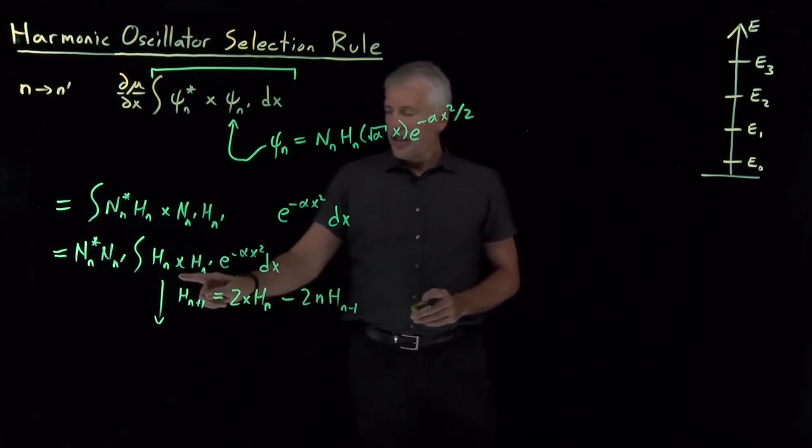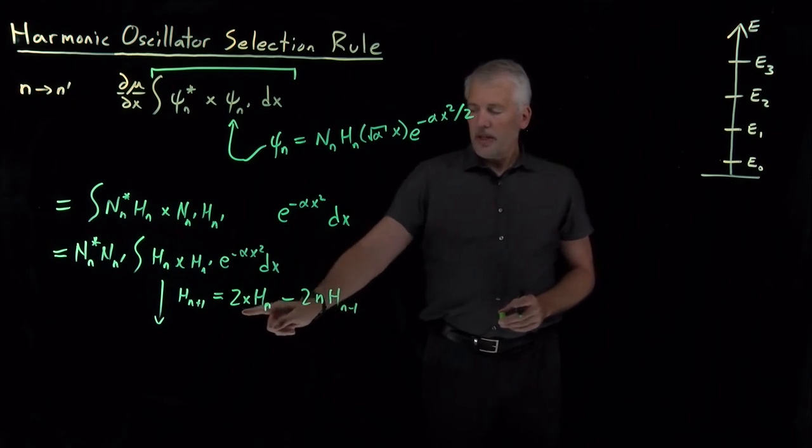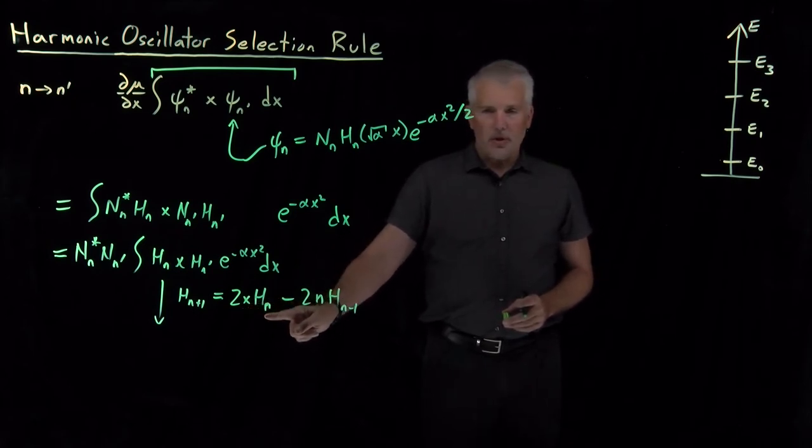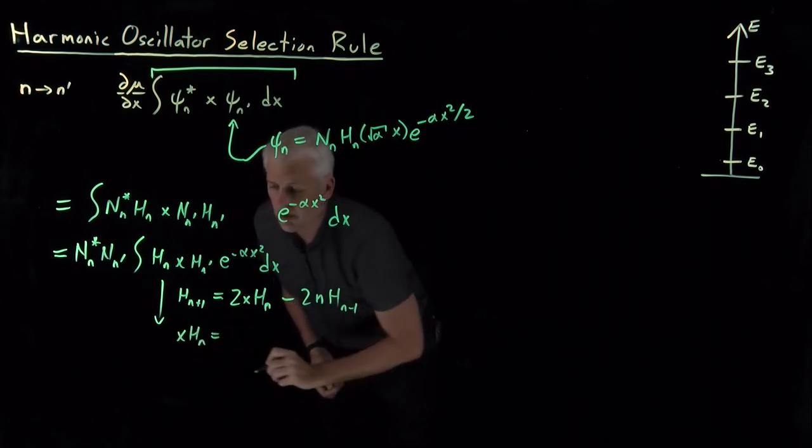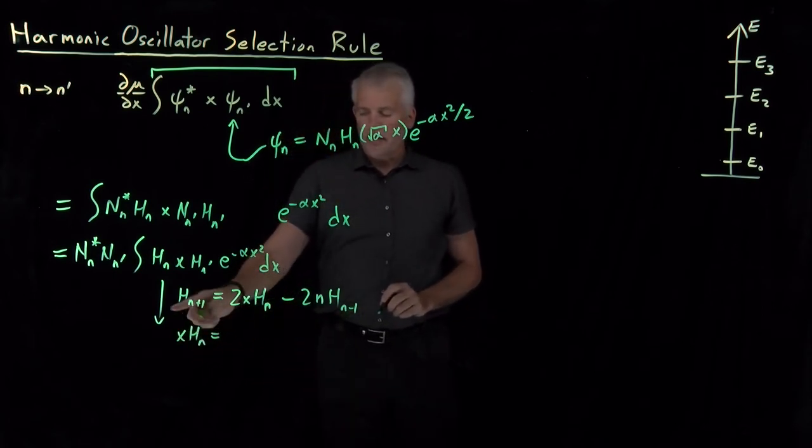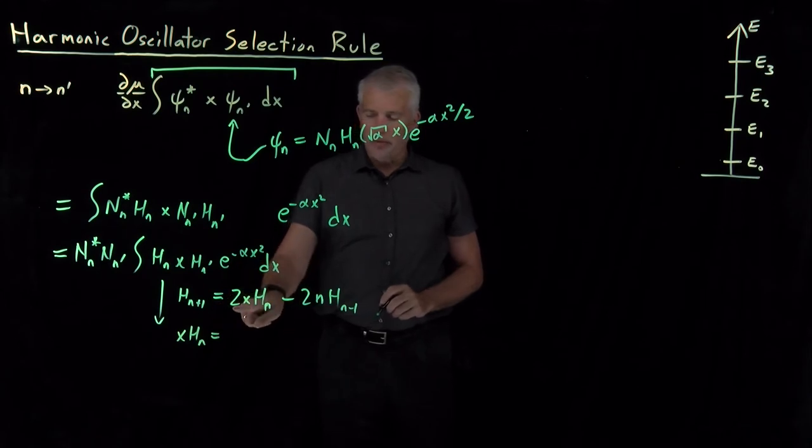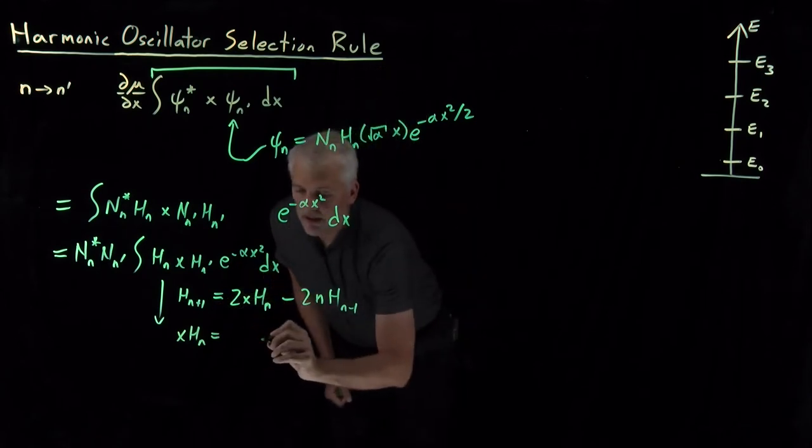So what I've got here is an x times a Hermite polynomial. Let me rearrange this equation to solve for x times a Hermite polynomial on one side of the equation. So x times the n-th Hermite polynomial, if I bring this over to the left, everything over to the right, and divide through by 2 to get rid of that factor of 2...